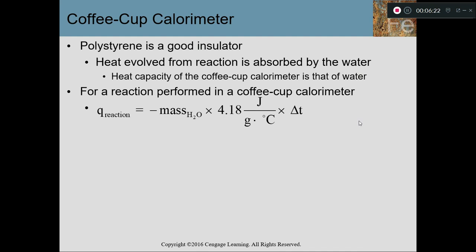When the sample reacts with the water, it's going to either release or absorb heat. For example, if you put sodium hydroxide into a coffee cup of water, the water's temperature would increase — meaning the water would be absorbing heat — and the energy absorbed by the water would be the exact same energy being released by the sodium hydroxide. To find the Q of the reaction, we use the calorimetry equation MC·ΔT using the mass of the water, the specific heat of water, and the delta T of the water. Find that amount of energy, then take the opposite sign.